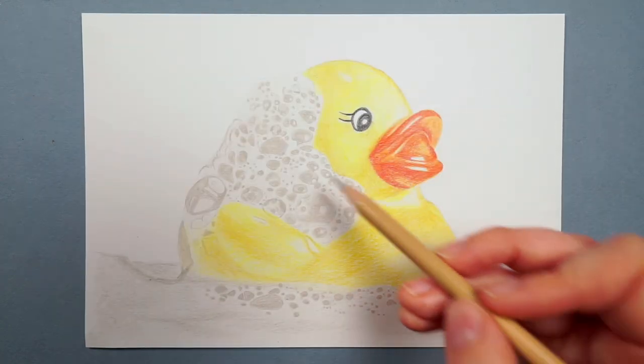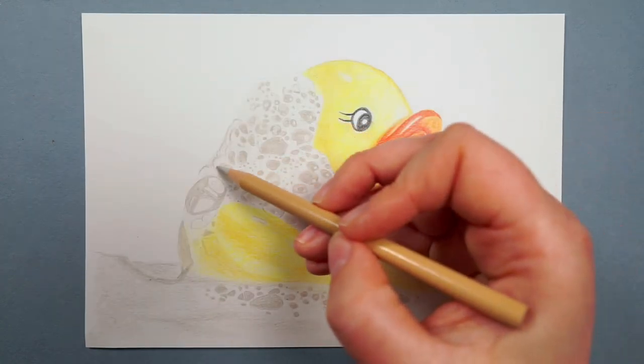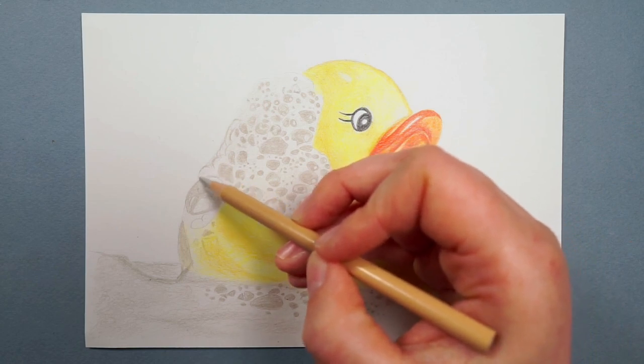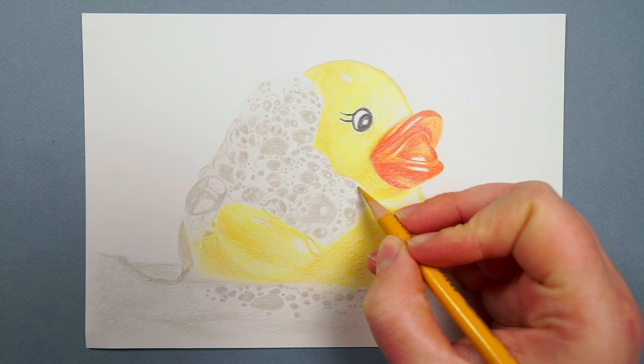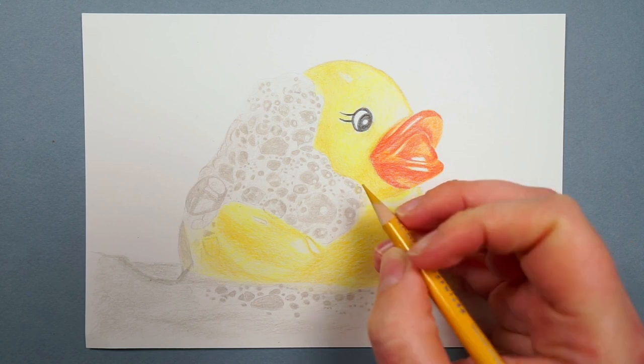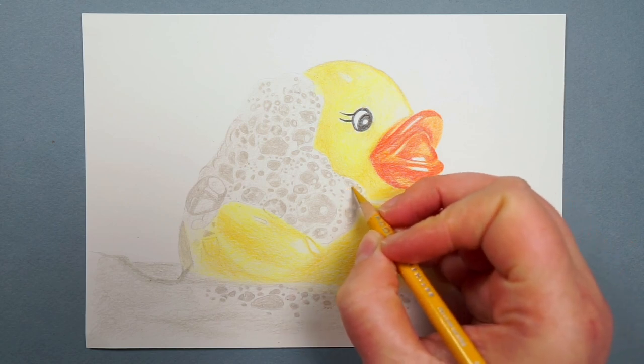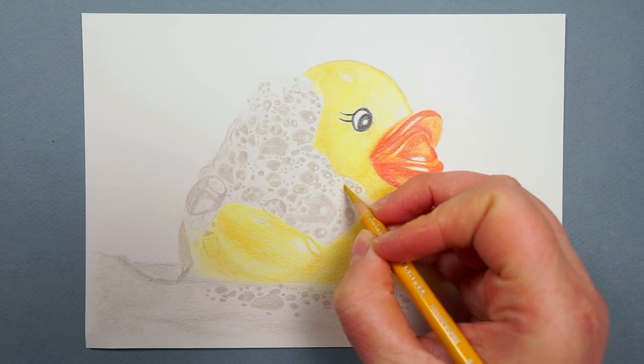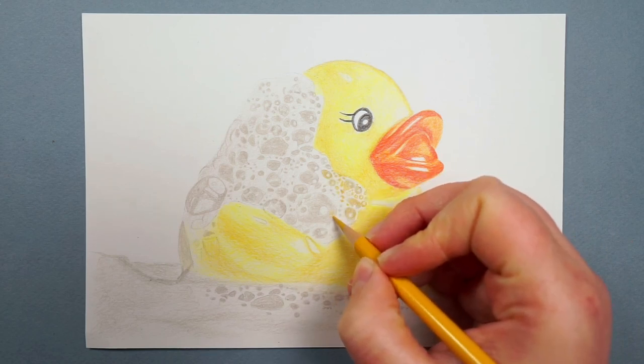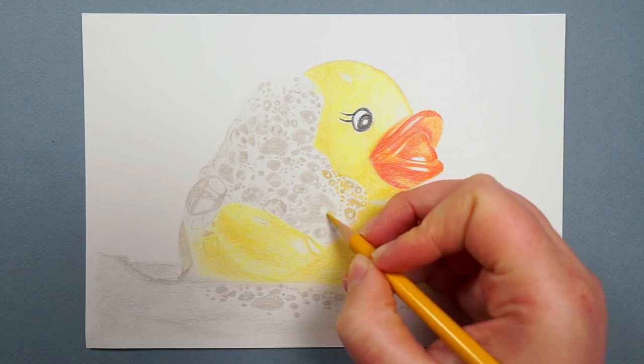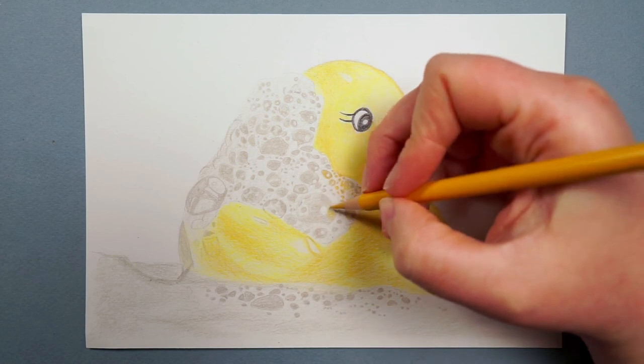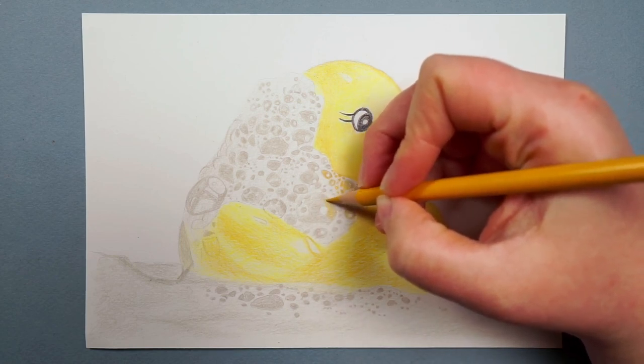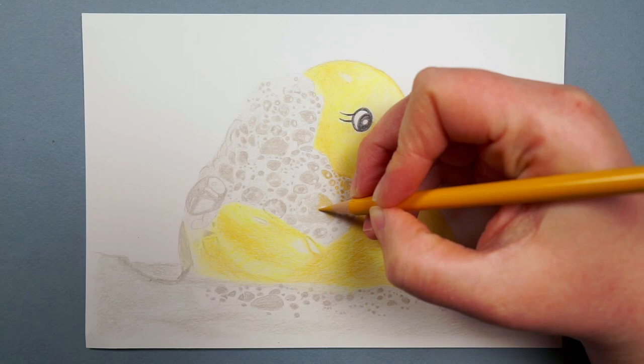So then by the end of this, we've got all of the bubbles marked in and it's a lot easier to see what we're doing and what we need to add. And because we've now got that all marked in, it's really just a case of filling in the colors. So I'm noticing that where the bubbles are in front of the duck, the bubbles are a little bit yellow. So I can go over these areas with the yellow because I want it to kind of look like it's showing through. But as I say, this is made far easier because I'm really just going over the shapes that I've already marked in.